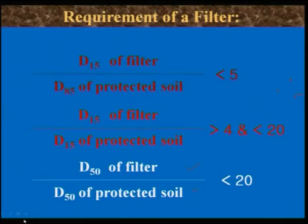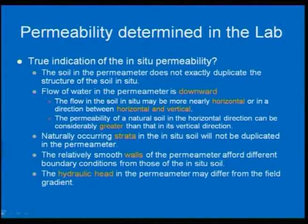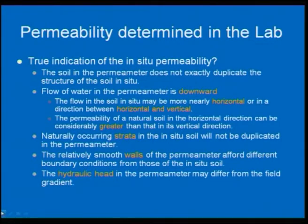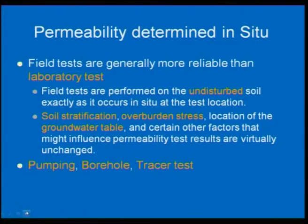Looking at what we have covered overall: coefficient of permeability and its tests - how to find the coefficient of permeability in the field as well as in the laboratory. In the laboratory, it is found by constant head or falling head permeability tests. We go for 3 to 4 tests and report the average permeability. These values should simulate your field conditions.